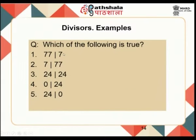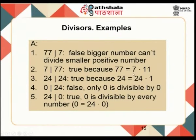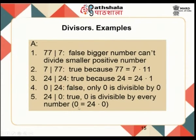Consider these true/false examples: (1) 77 divides 7 — false, because a larger number cannot divide a smaller positive integer. (2) 7 divides 77 — true, because 77 = 7 × 11, so 7 and 11 are factors. (3) 24 divides 24 — true. (4) 0 divides 24 — false, only 0 is divisible by 0. (5) 24 divides 0 — true, because 0 is divisible by every number.